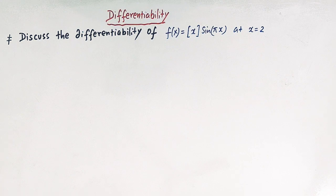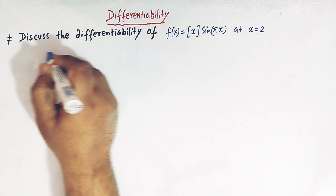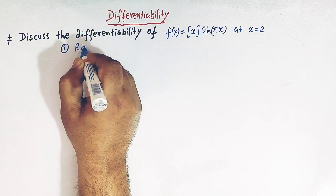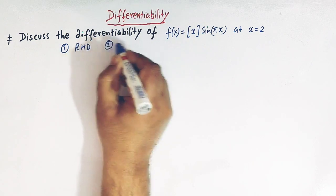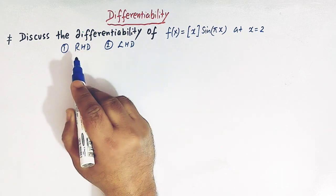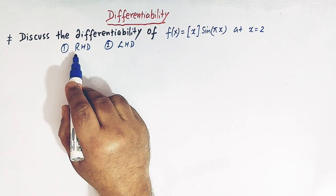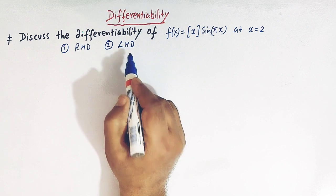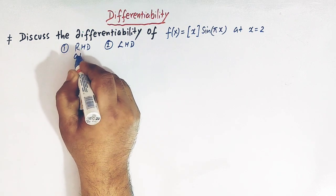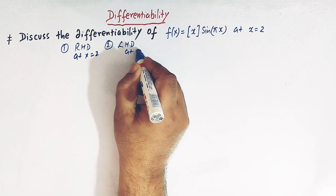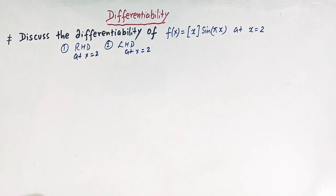For this, we'll first find the right-hand derivative and then we'll find out the left-hand derivative. Then we'll see whether the right-hand derivative and the left-hand derivative at x = 2 are equal or not. So let us start.